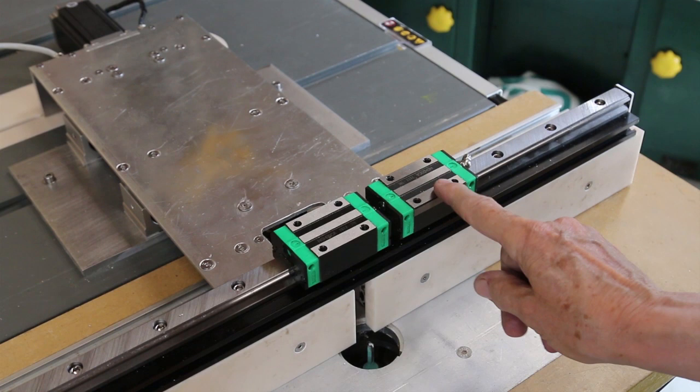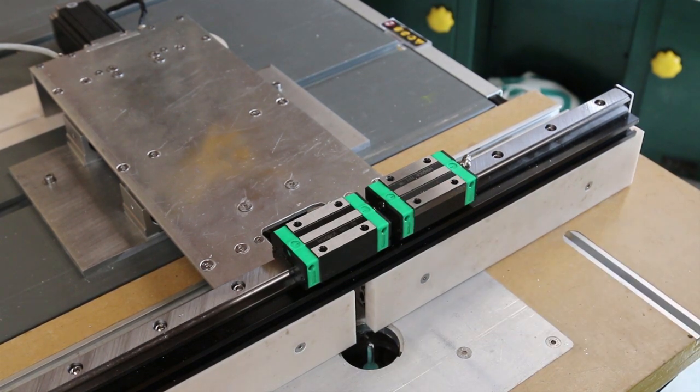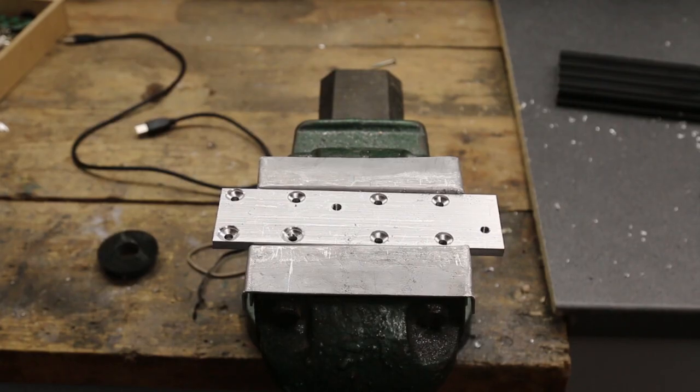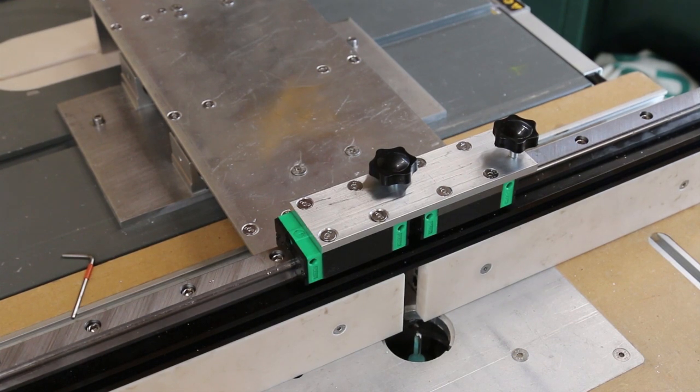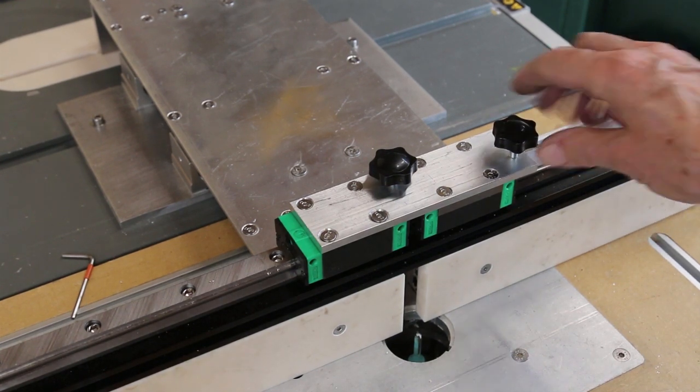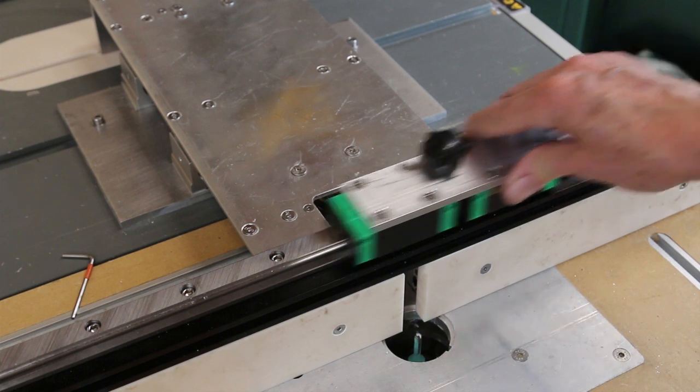The two carriages on the linear rail are joined together with an aluminum plate. This bolts on top and has threaded parts for securing bolts. And it is incredibly smooth.